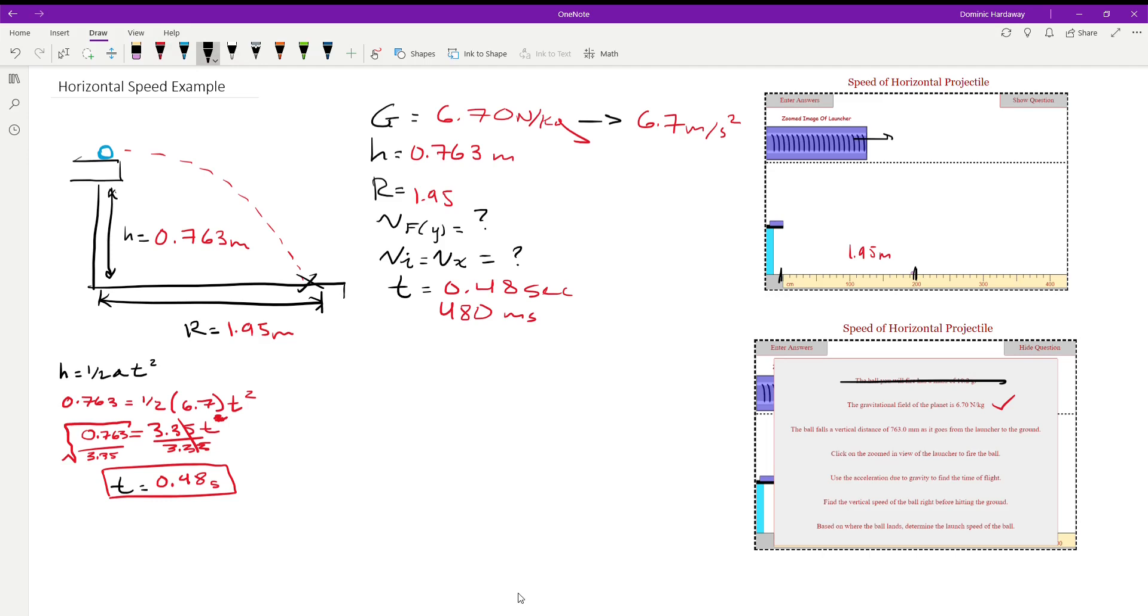Now we're going to find the velocity in the x. And you might be wondering why we're doing that. Well, if you think about the problem intuitively, the ball is going to be flying out of the launcher. And so you can deduce by that that the velocity in the y direction will be 0 initially. And so that only leaves the velocity in the x left. So we know that that is going to be the initial velocity, is the velocity in the x.